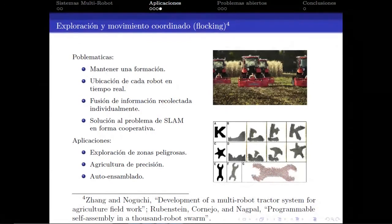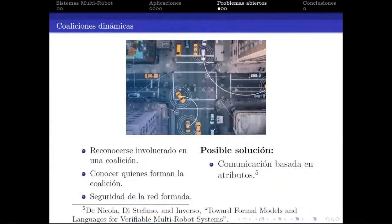Un problema interesante es el SLAM cooperativo, es decir, reconocimiento de ubicación y mapeo simultáneo. Las aplicaciones potenciales incluyen la exploración de zonas peligrosas como minas o zonas de guerra, la agricultura de precisión o el autoensamblado.